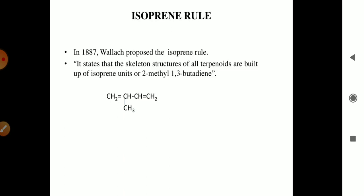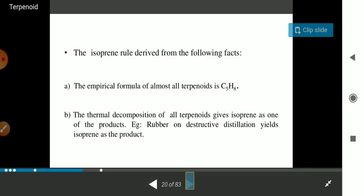This is the formula of isoprene. The isoprene rule can be explained by its formula C5H8. The thermal decomposition of all terpenoids gives isoprene as one of the products.